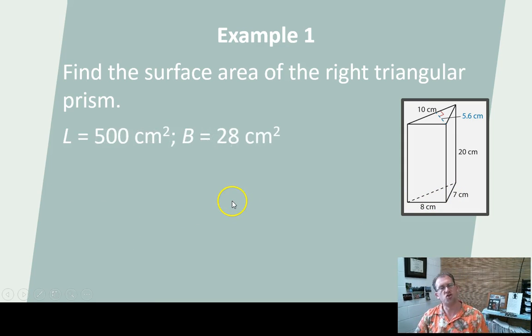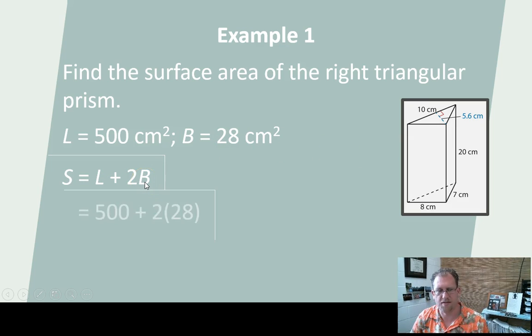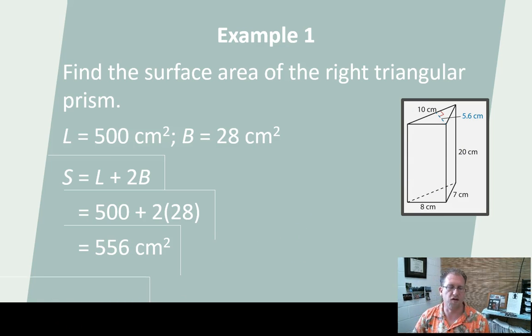But now notice I have two of those triangles. So 500 is the lateral surface area. The base is 28. The formula for surface area is the lateral area plus twice the base. So 500 plus 2 times 28 is 556 square centimeters. That's the surface area of this triangular prism. You can go back and look at that again if you need more help.